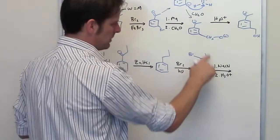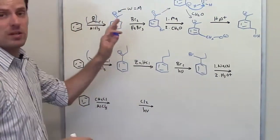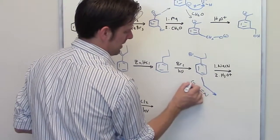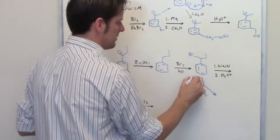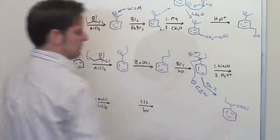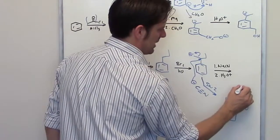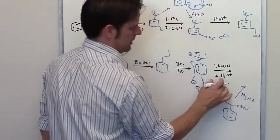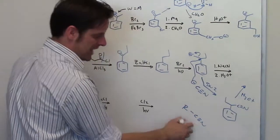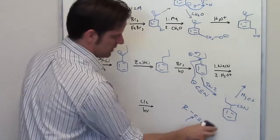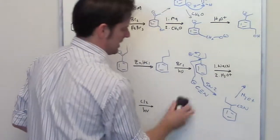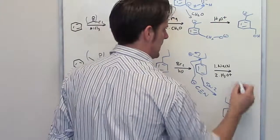What happens if I take this molecule and treat it with sodium cyanide followed by aqueous acid? This is a two-step sequence, very similar to one seen earlier. In step one, sodium cyanide acts as a source of cyanide, which performs an SN2: cyanide forms a bond with that carbon, kicks off the bromide, and gives the nitrile product. In step two, treating that nitrile with aqueous acid converts the carbon into a carboxylic acid. The final product is the carboxylic acid.